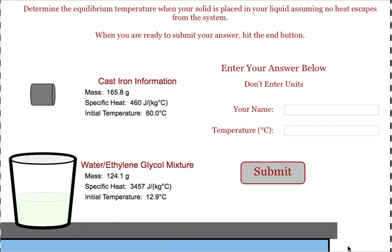In this program, you're trying to determine the final temperature when you put a hot object into a cold object. This time we're going to be putting a piece of cast iron into a mixture of water and ethylene glycol. The iron starts at a temperature of 60. The water ethylene glycol mixture starts at a temperature of 12.9.